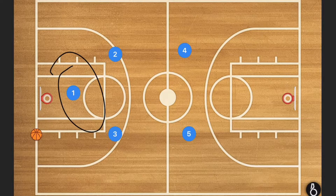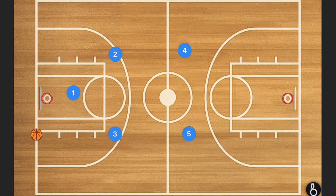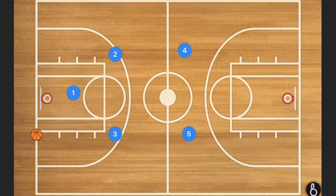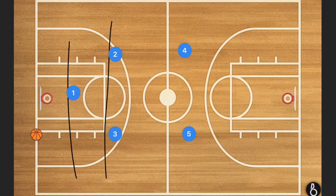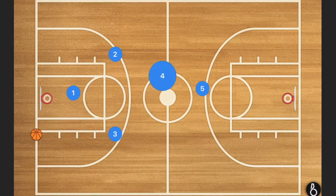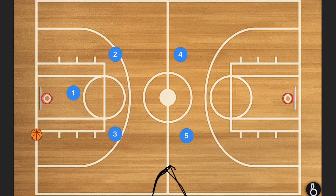First we have the 1-2-2. These defenses get their name from the number of players in each line. There's also a 1-2-1-1, but we'll go over that one later. Right now we're doing the 1-2-2. The idea behind every single full court press defense is to trap the opponent on your side of the court.